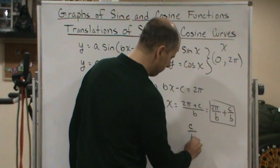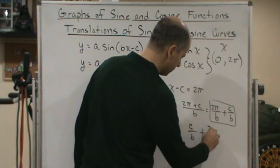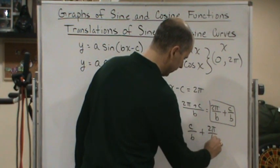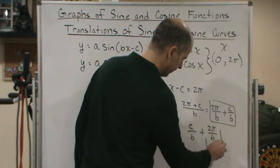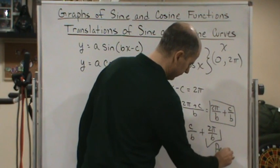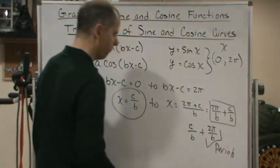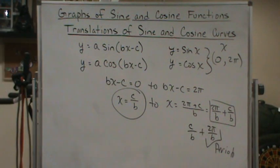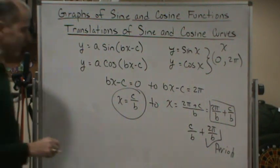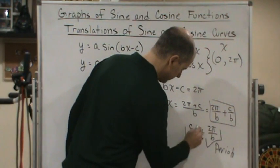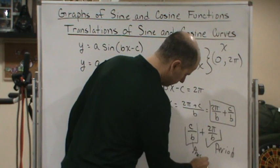c divided by b plus two pi over b is the period. What do we call c over b? c over b is the phase shift.